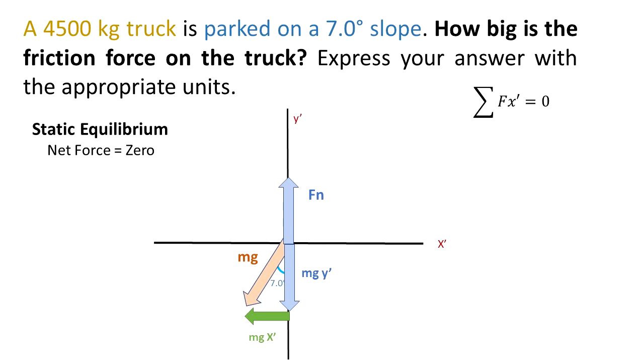But the problem says that the truck is static. That means that we need an opposite force that will counteract the action of the Mg x', and we know that the summation of the forces in the x' direction is equal to 0. So the Mg x' is equal to the static friction force.